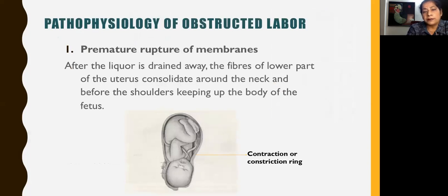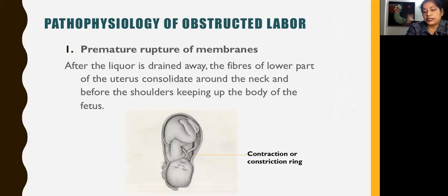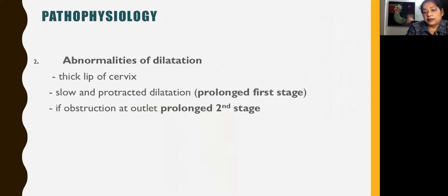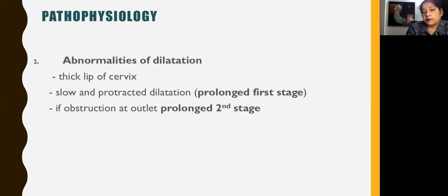Now let us come to the pathophysiology. Premature rupture of membranes: when this occurs, after the liquor is drained away, the fibres of the lower part of the uterus consolidate around the neck of the baby before the shoulders, therefore keeping the body of the fetus high up. This is the formation of a constriction ring. Other factors could be abnormalities in dilatation — a thick lip of cervix which has not effaced, slow and protracted dilatation, that is prolonged first stage of labour, or even prolonged second stage because of obstruction at the outlet.